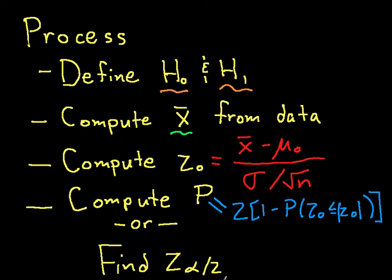From this we find z α/2, and then we compare the computed value of z₀ with our value of z α/2 to see if z₀ falls in the critical region. If it does fall in the critical region, then we will reject H₀.